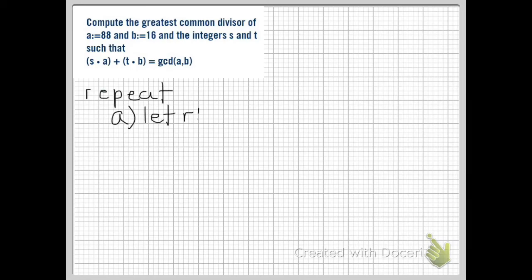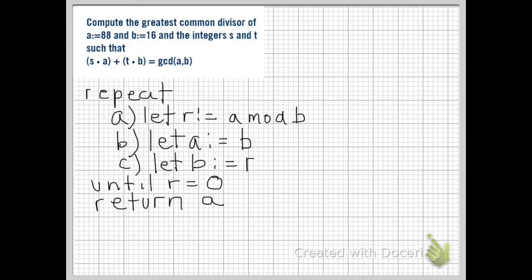Now Euclid's algorithm tells us: repeat, assign a mod b to r, assign b to a, and assign r to b until r equals 0. When r equals 0, return a. If it's not equal to 0, we repeat the process over again.